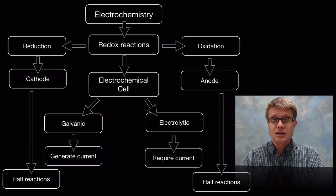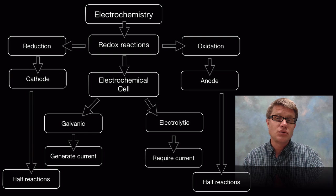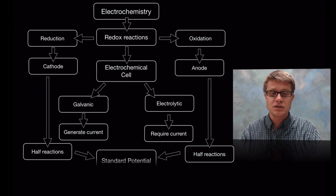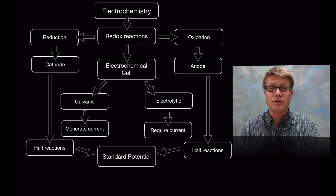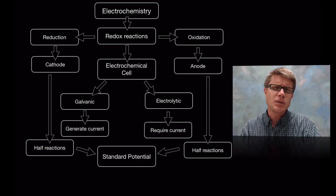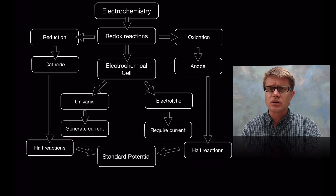And so what we can do is analyze this cell. We can break it down into its two half reactions. We can figure out the potential of those two half reactions and then simply add them together to figure out the standard potential. So how much energy that cell could produce or require if it's electrolytic. Now this would be at STP, Standard Temperature and Pressure.